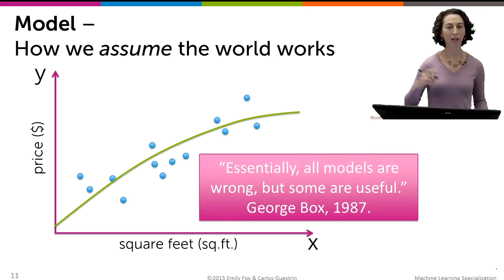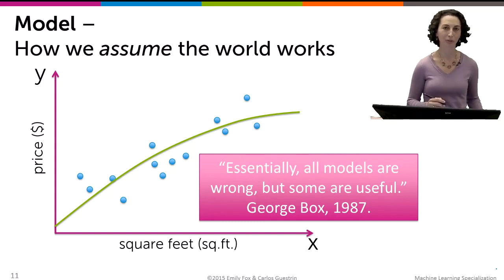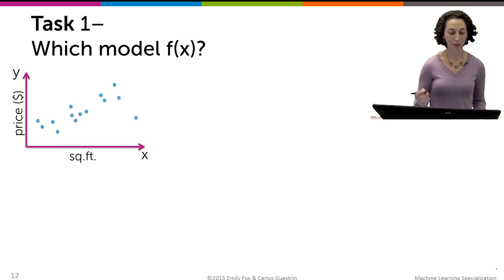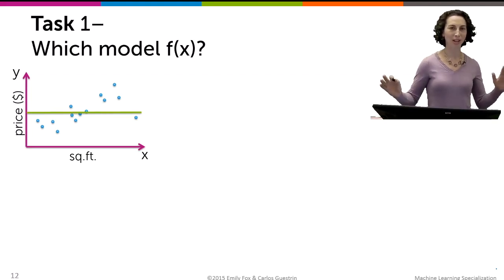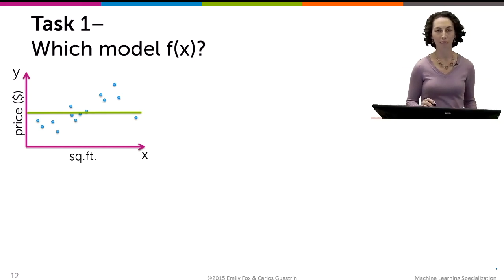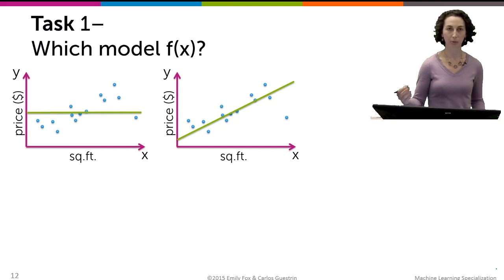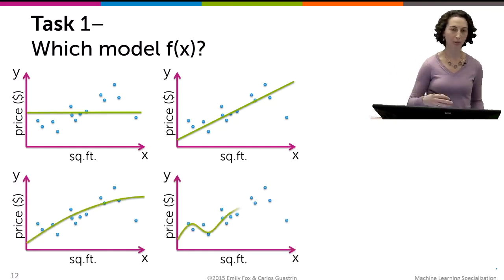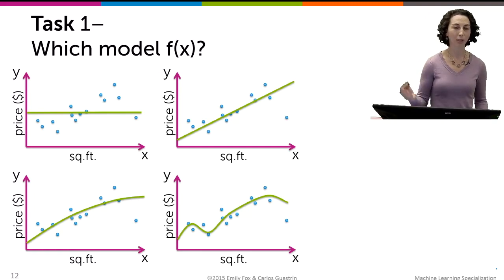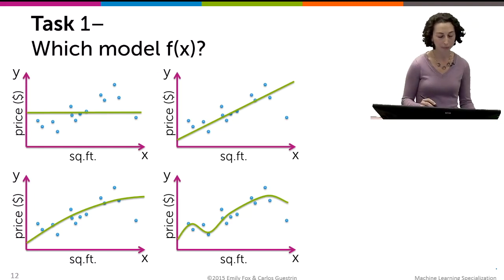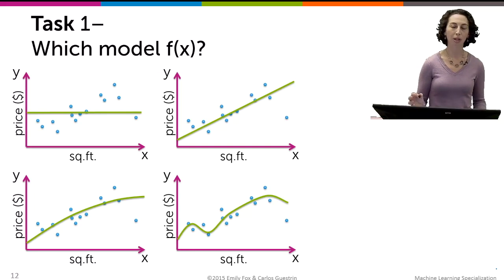Everything written represents our belief about how the world works — or maybe just something useful, as George Box said. The first regression task is figuring out what model to use. Are we going to assume a constant relationship, meaning every house sells for the same amount regardless of size? That's probably not a great model. A linear relationship, where price increases at the same rate as square footage? Or a quadratic fit, or higher-order polynomial? The list of models to consider is very long, and part of this course is exploring those different options to determine which one to use for a given dataset and task.